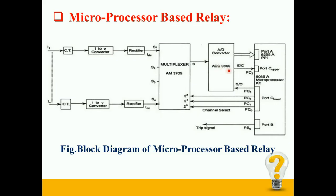Now the most important part in the relay, that is the microprocessor, comes into picture. The microprocessor sends signal to ADC for starting the conversion. The microprocessor reads the end conversion signal to examine whether the conversion is done or not. As soon as the conversion is over, the microprocessor reads the signal in digital form and then compares it with the pickup value. The microprocessor first determines the magnitude of fault current and sends a trip signal to the circuit breaker after some predetermined time delay. That's how a microprocessor based relay actually works.